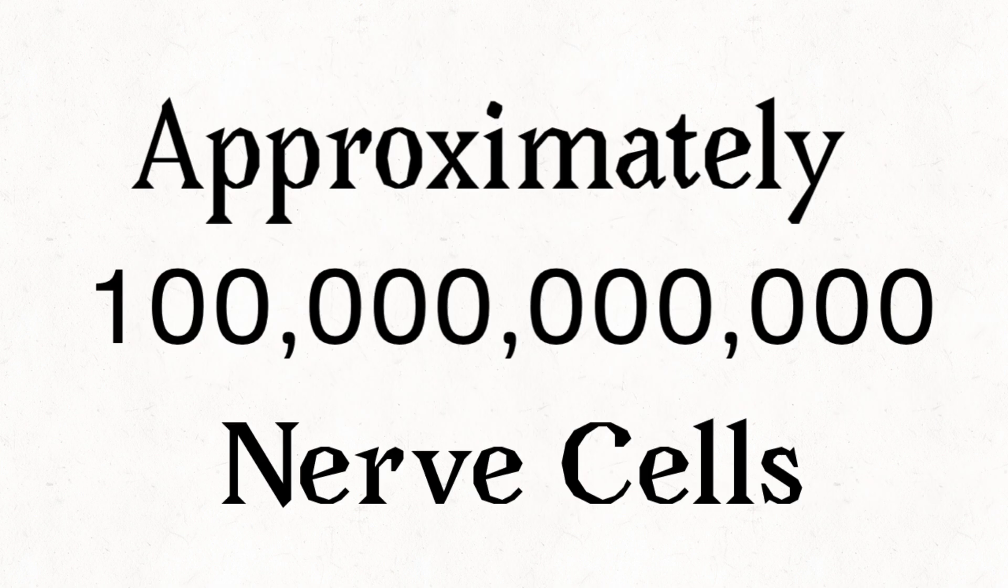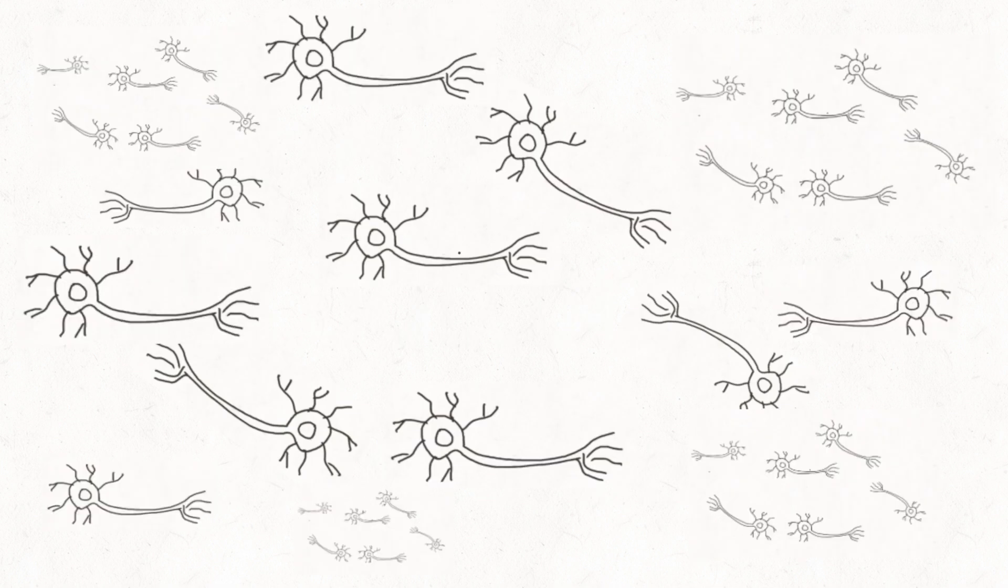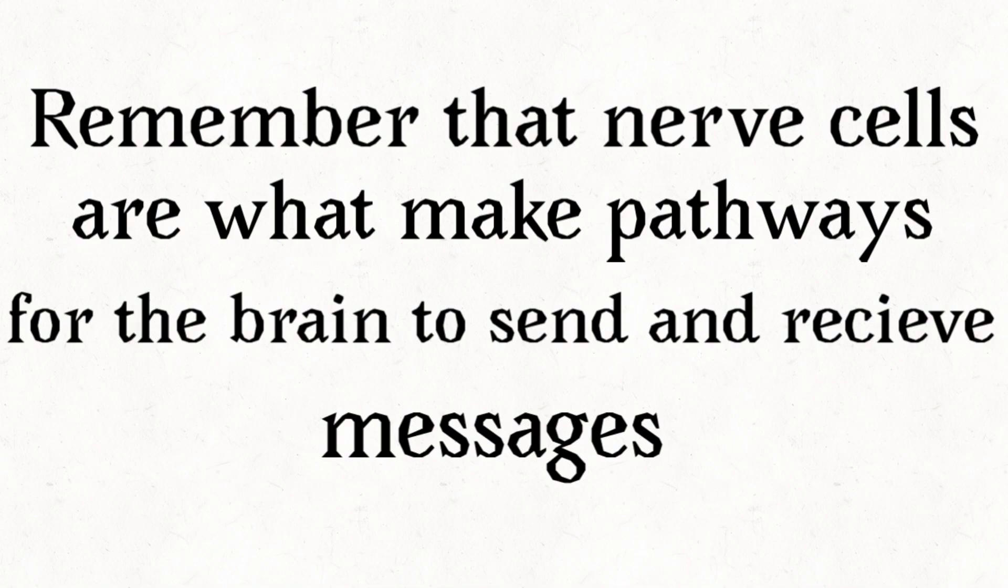Your brain has approximately 100 billion nerve cells. Remember that nerve cells are what make pathways for the brain to send and receive messages.